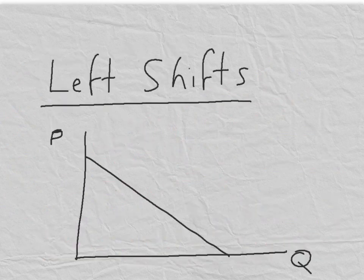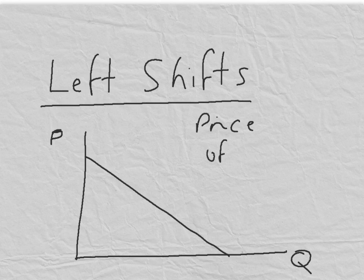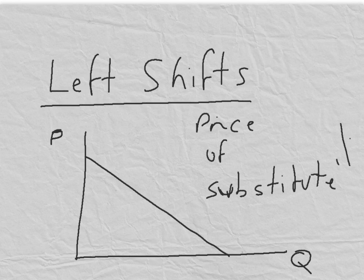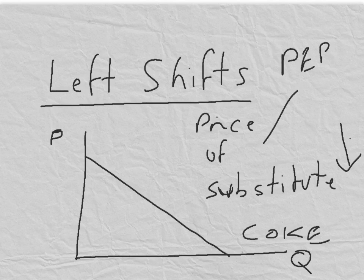So now let's look at another one of these changes — a left shift. Let's imagine that the price of a substitute product for the one whose demand curve is drawn here goes down. So if this was the demand curve for, shall we say, Coke, let's assume that the price of Pepsi goes down. Now some people will switch over to Pepsi. So what will happen is that the demand curve for Coca-Cola will shift to the left.